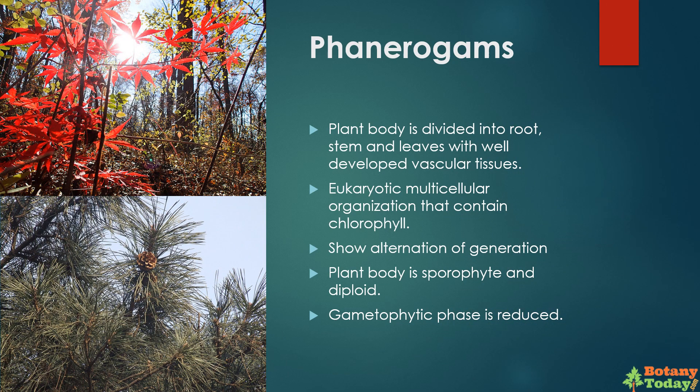What are phanerogames? The plant body of phanerogames is well differentiated into root, stem, and leaves. They also have well-developed vascular tissues. Phanerogames are eukaryotic multicellular organisms that contain chlorophyll. The life cycle of phanerogames is completed in two phases: sporophytic phase and gametophytic phase. This is called alternation of generation. The plant body is sporophyte and diploid; the gametophytic phase is present but reduced.